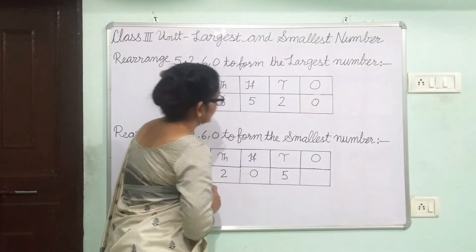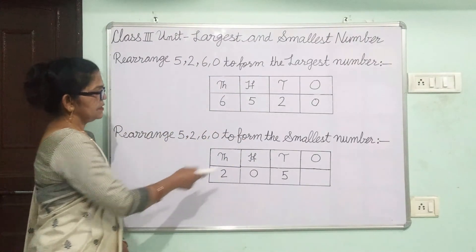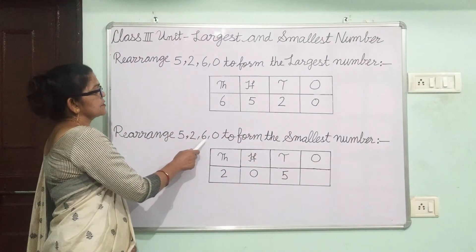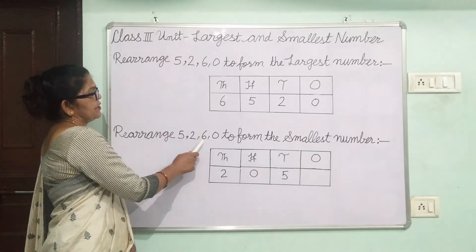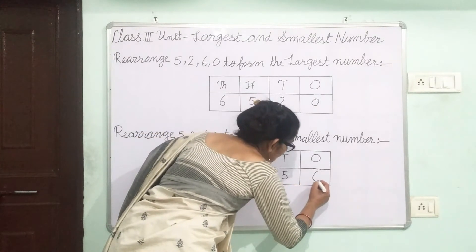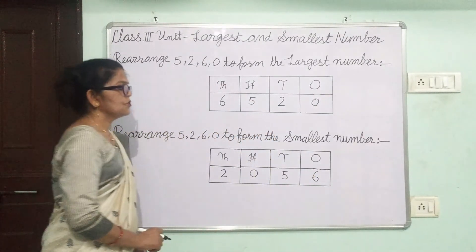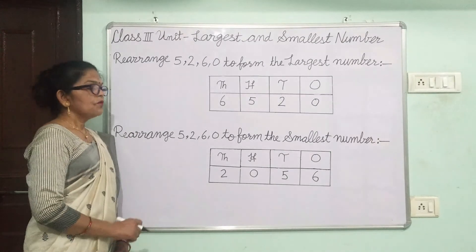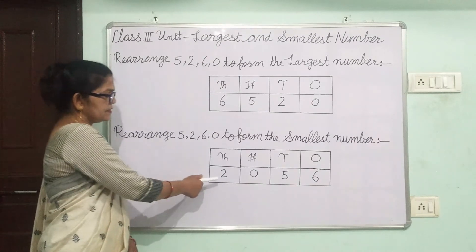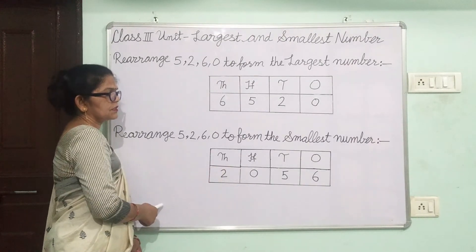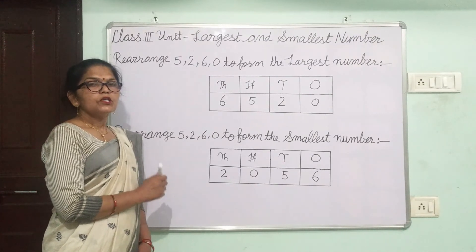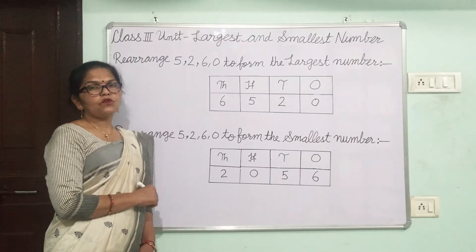Now, we will write the remaining digit — which is also the largest digit — in the 1s place. The remaining digit is 6, so 6 will go in the 1s place. Students, you can see that we have formed the smallest 4-digit number, which is 2056. I hope you understood today's topic. Thanks for watching my video.